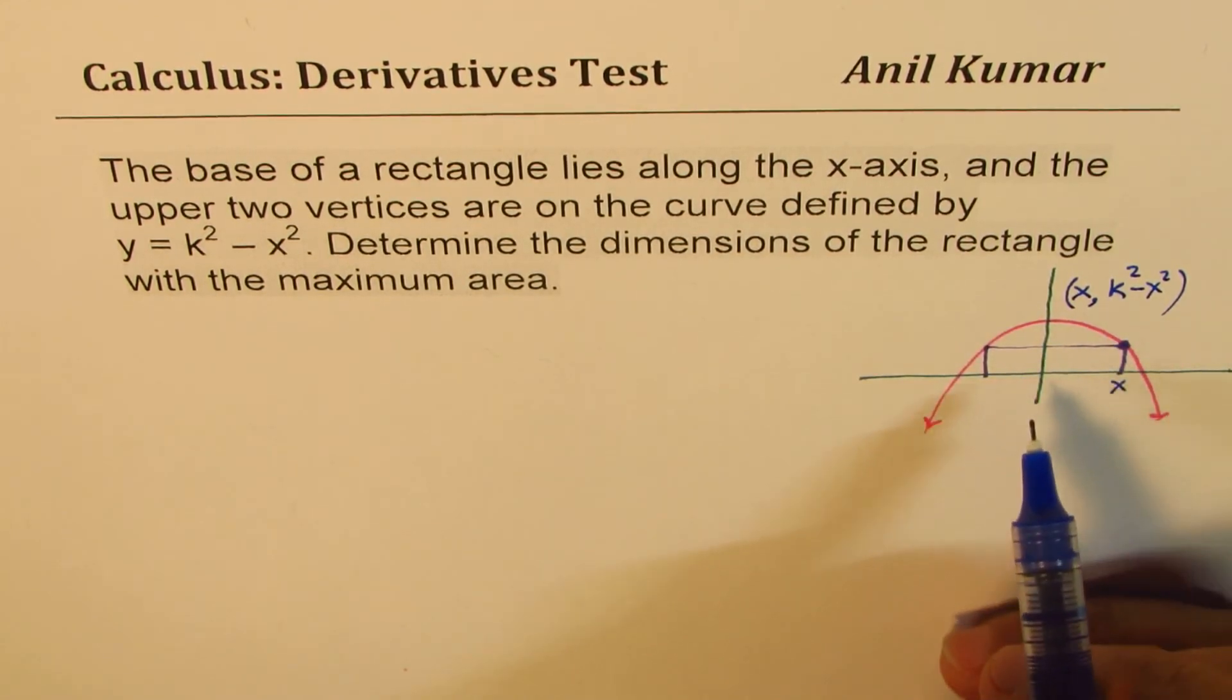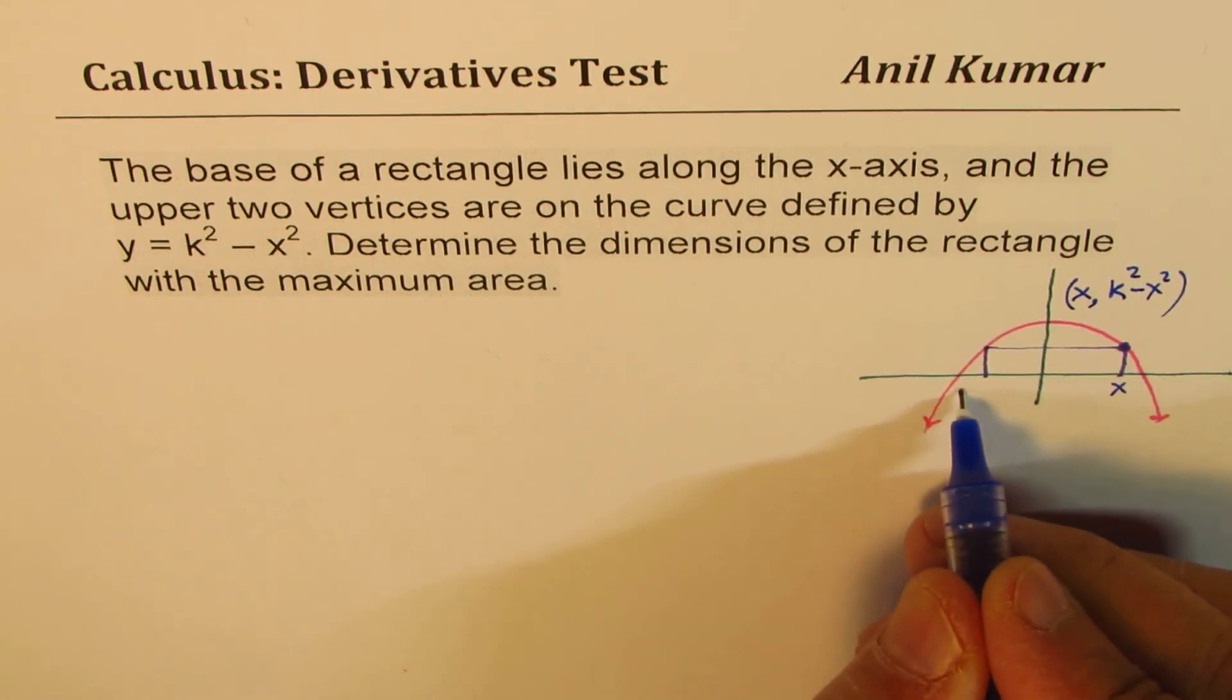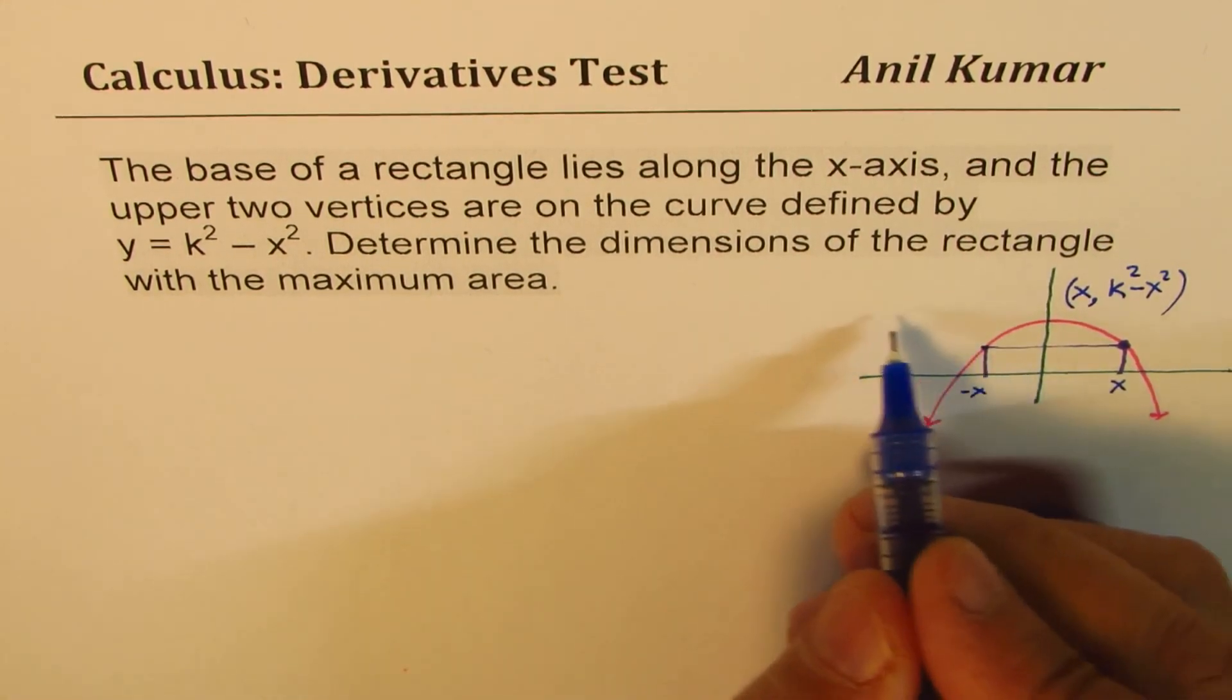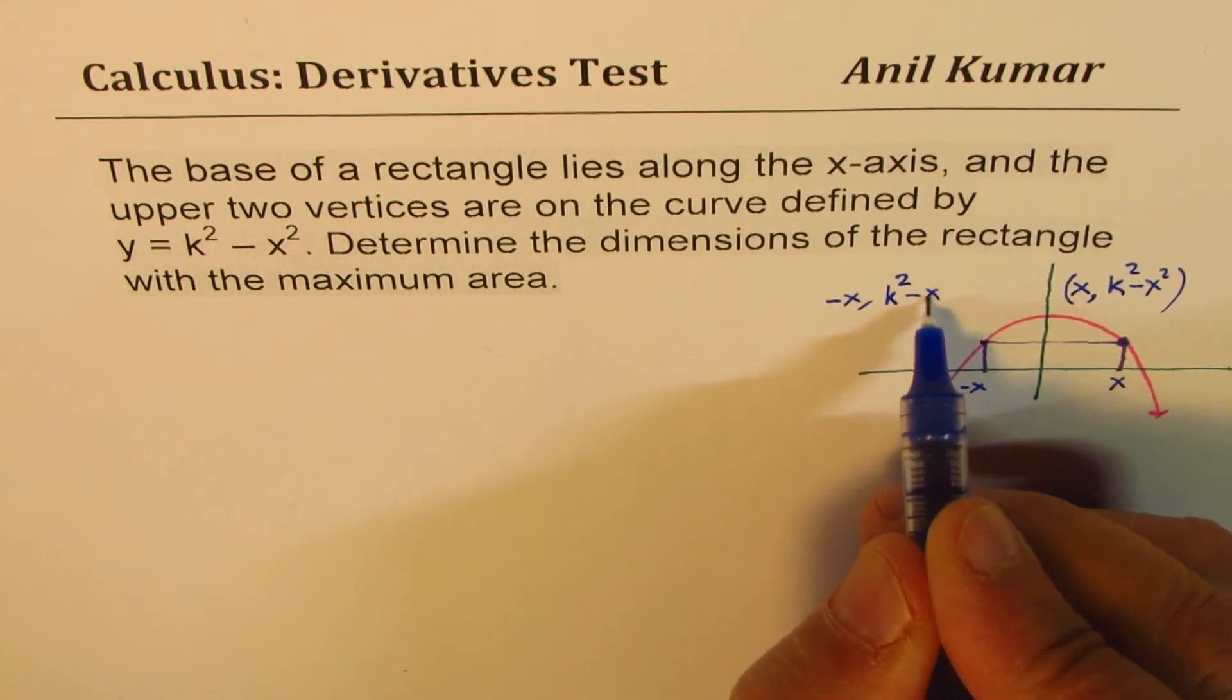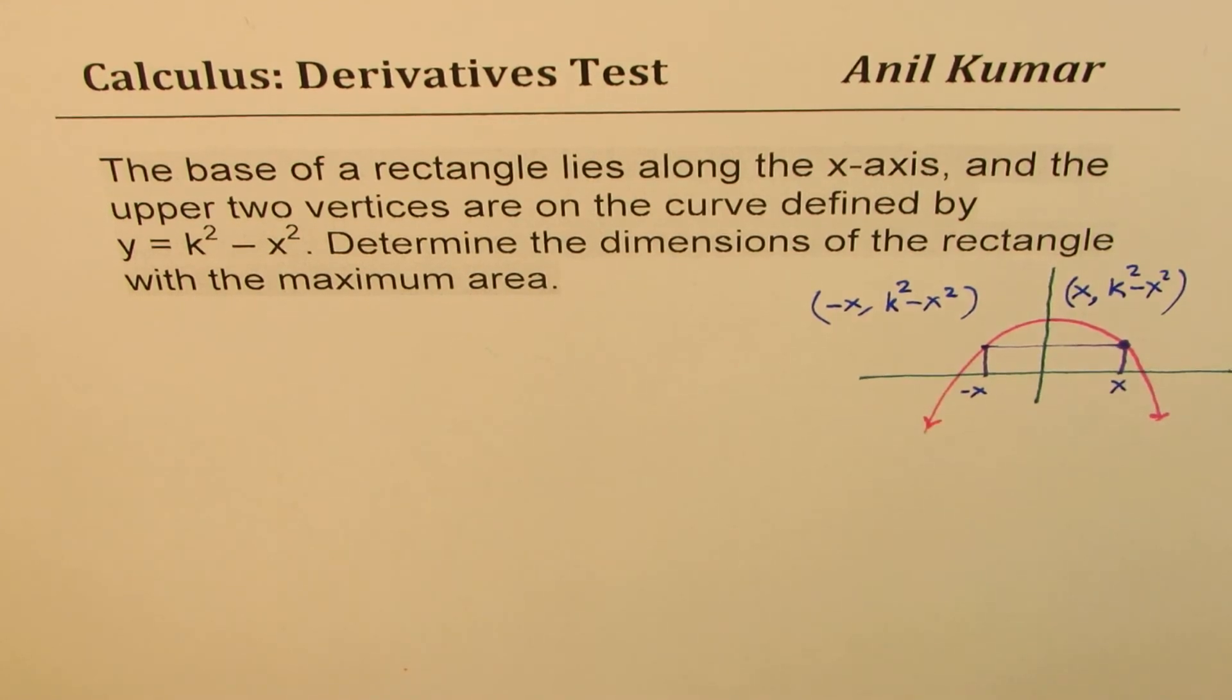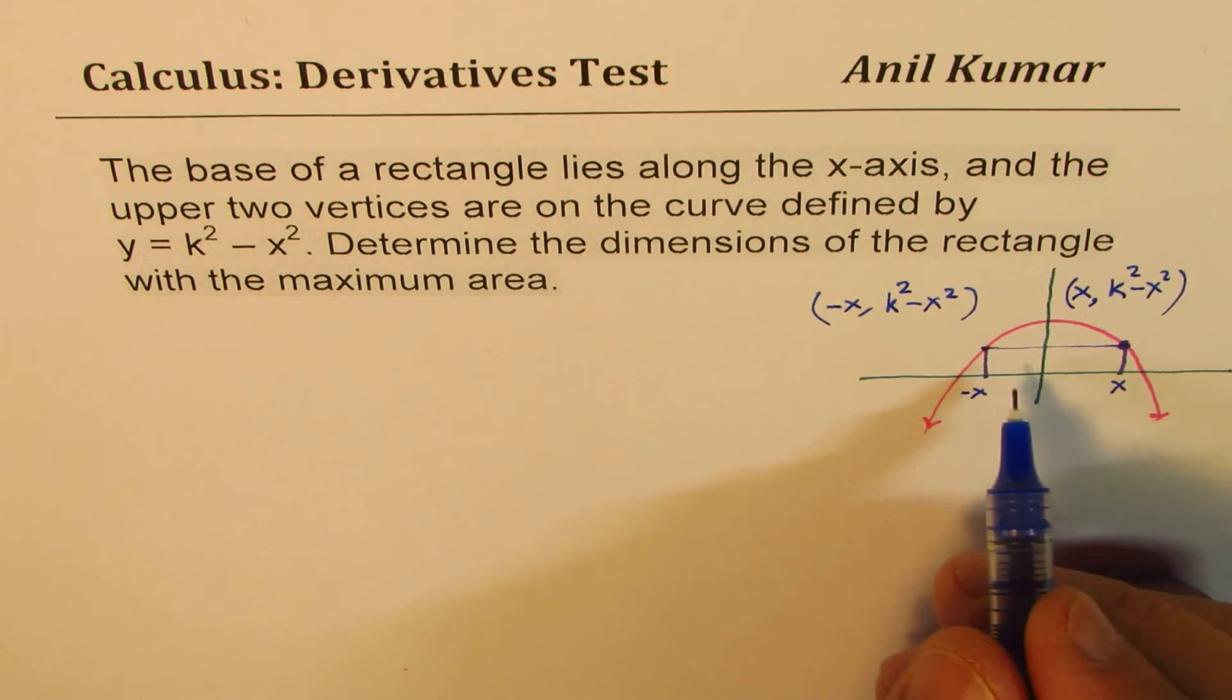Now, that really means that we have length as 2x, right? Since this will be from the symmetry, minus x. And this point here will be minus x and y value being same, which is k squared minus x squared. Perfect. So these are the two vertices on the parabola. Now, what is the area of this rectangle?